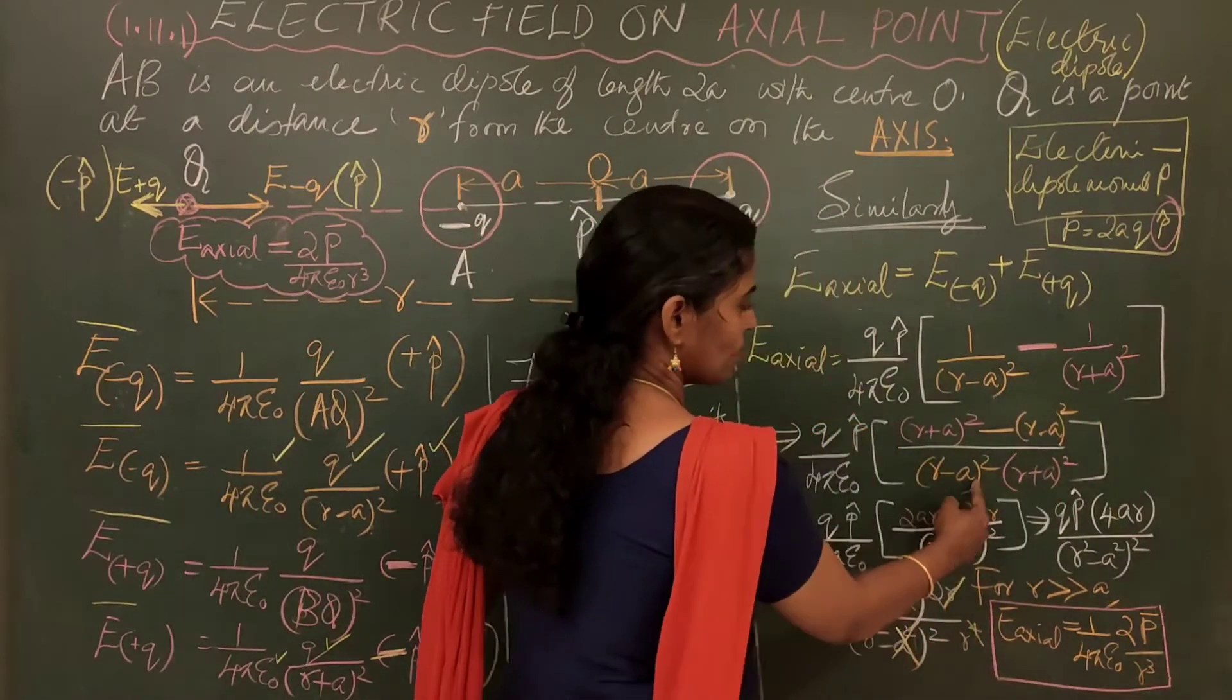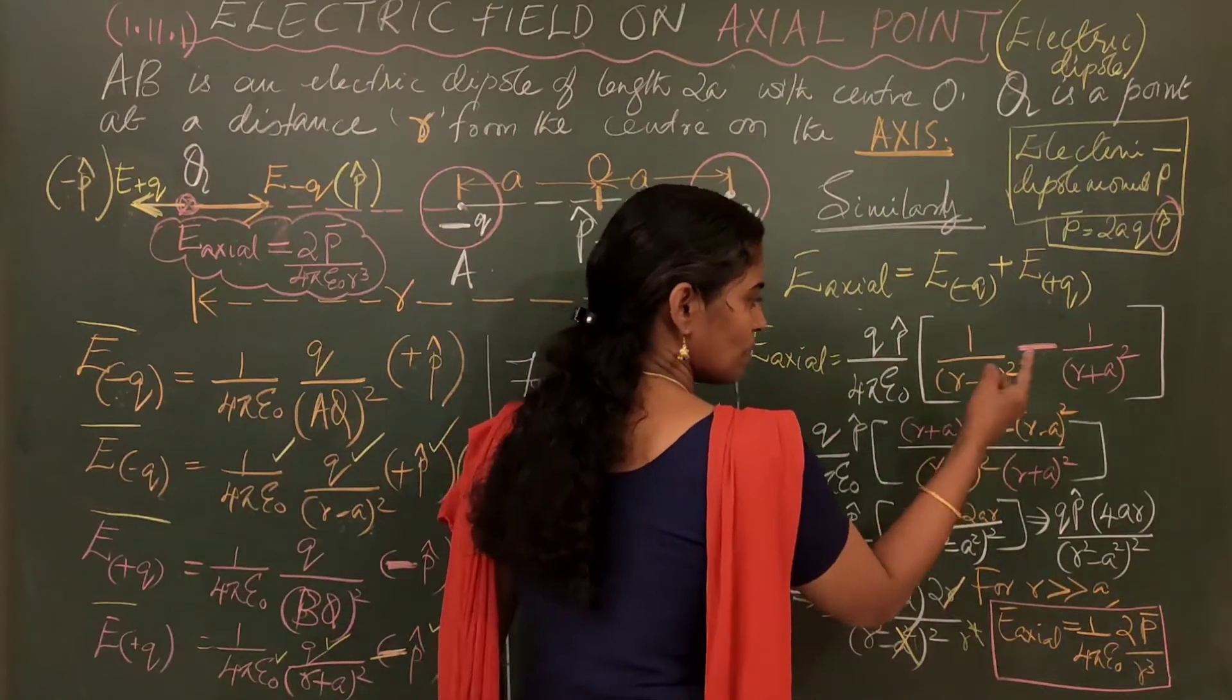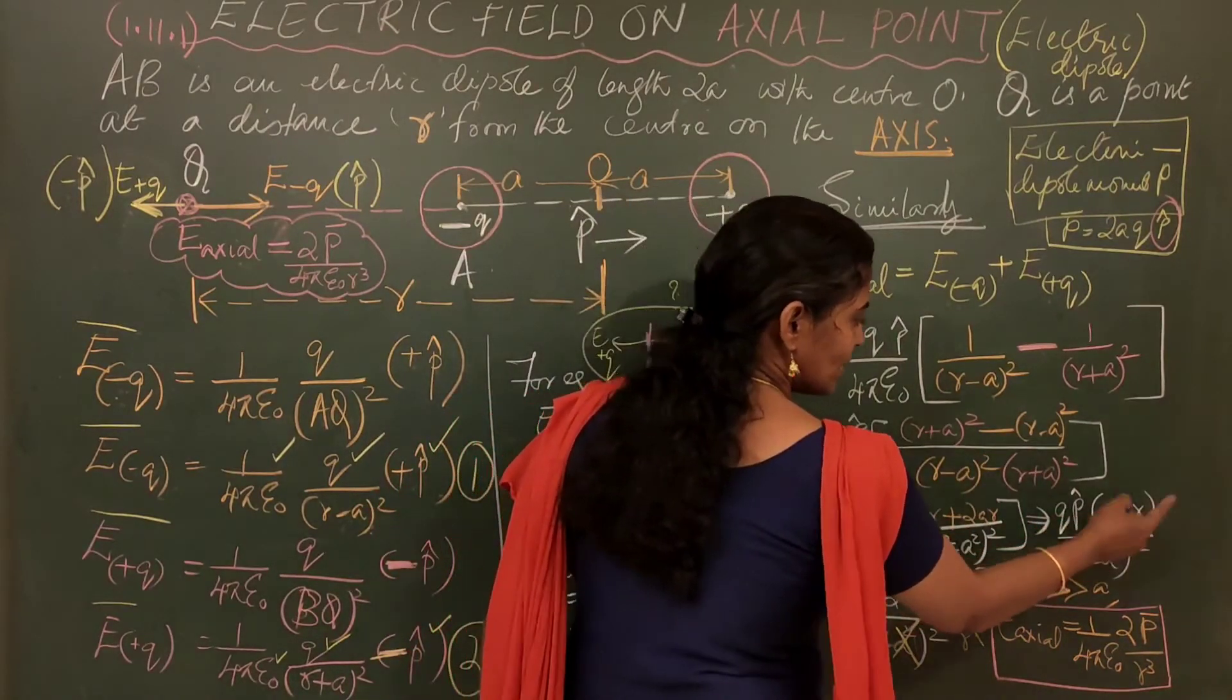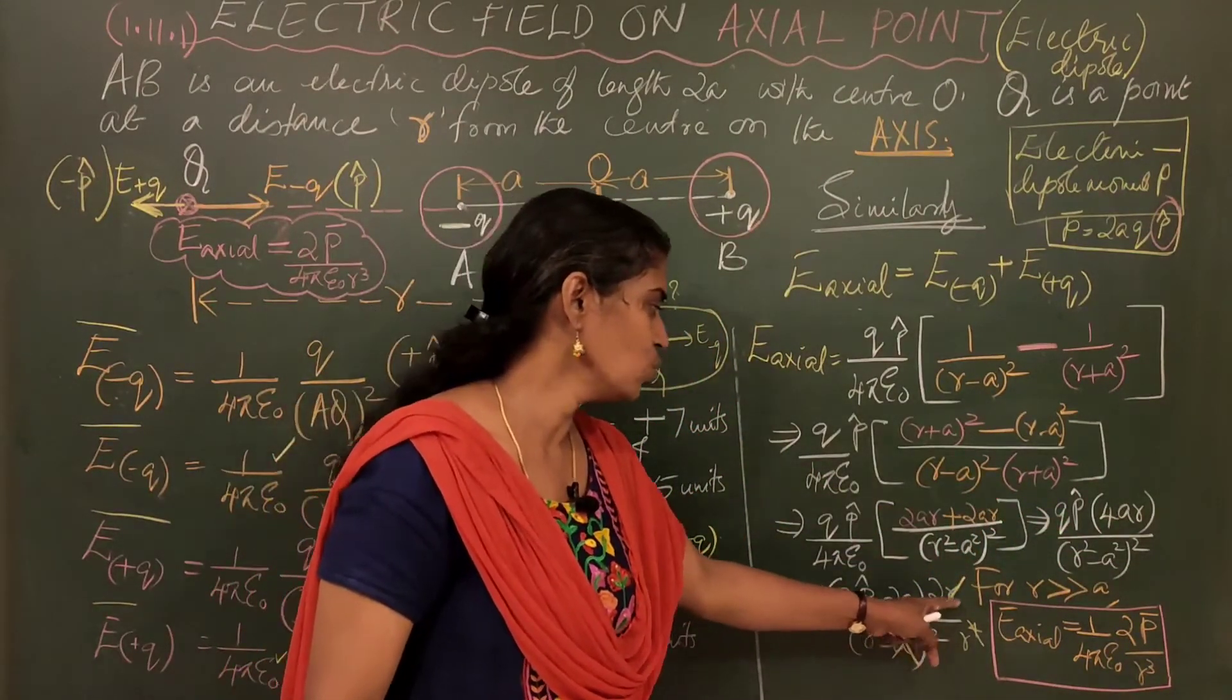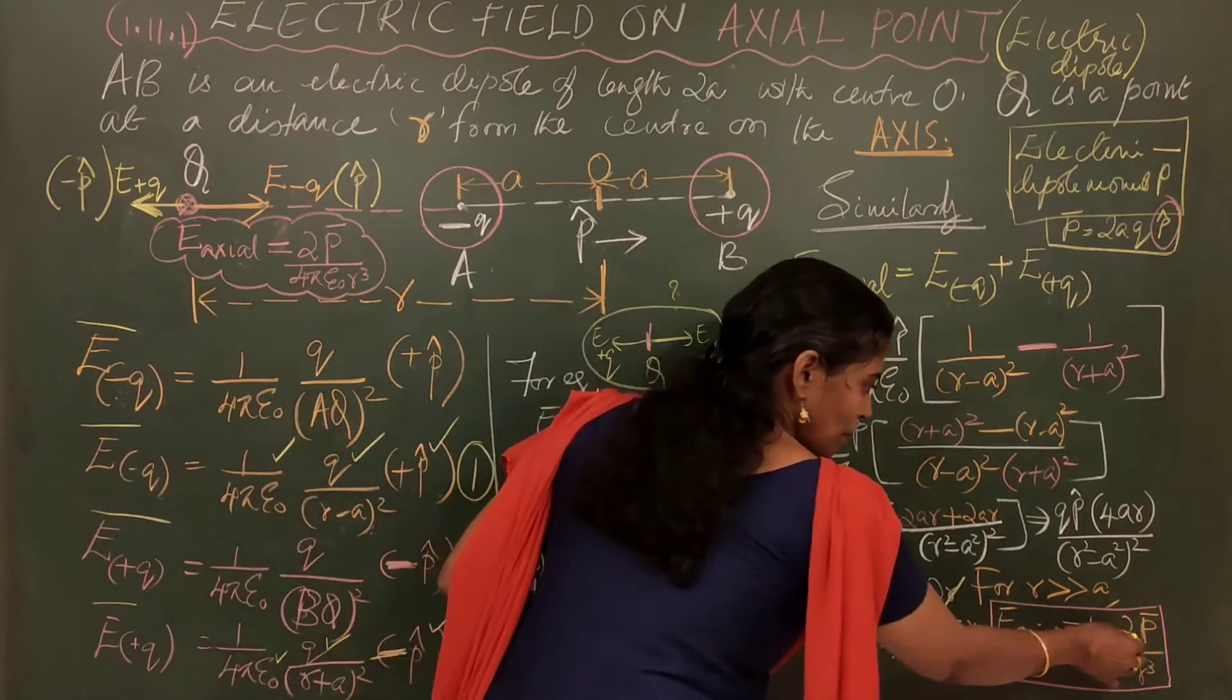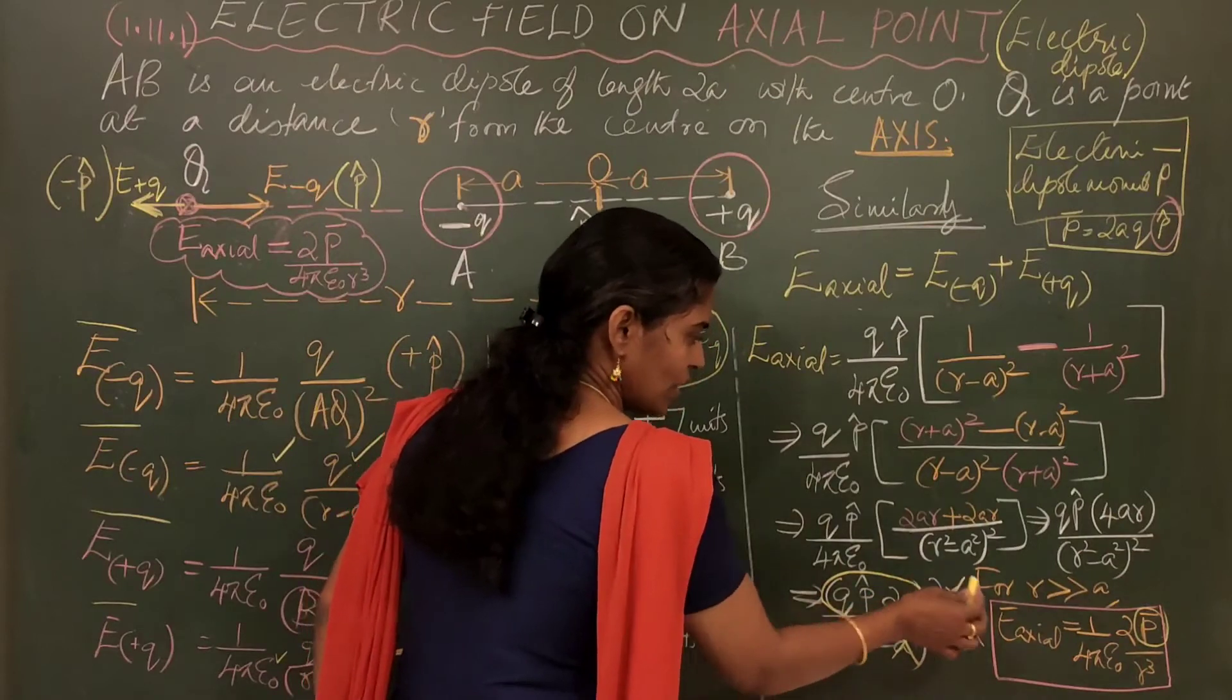You take the LCM. R minus A the whole square. R plus A the whole square. Cross multiplying you will get R plus A here. R minus A here. This is of the form A plus B the whole square minus A minus B the whole square. When you cancel, you will get it as 2AR here. 2AR here. Total you will get it as 4AR. 4AR I write in two manner. 2A here. 2R here. But this all together. All those things I told you here. This thing. This is together known as P bar. This is P bar. I told you P bar is 2AQ P cap. So, 2AQ P cap is P bar.